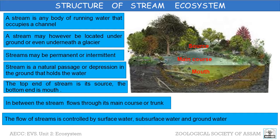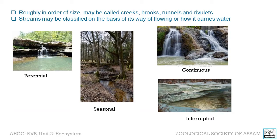The flow of a stream is controlled by three inputs: surface water, subsurface water, and groundwater. Surface and subsurface water are highly variable between periods of rainfall, while groundwater has a relatively constant input and is controlled more by long-term patterns of precipitation. Roughly in order of size, streams may be called various names like creeks, brooks, runnels, and rivulets.